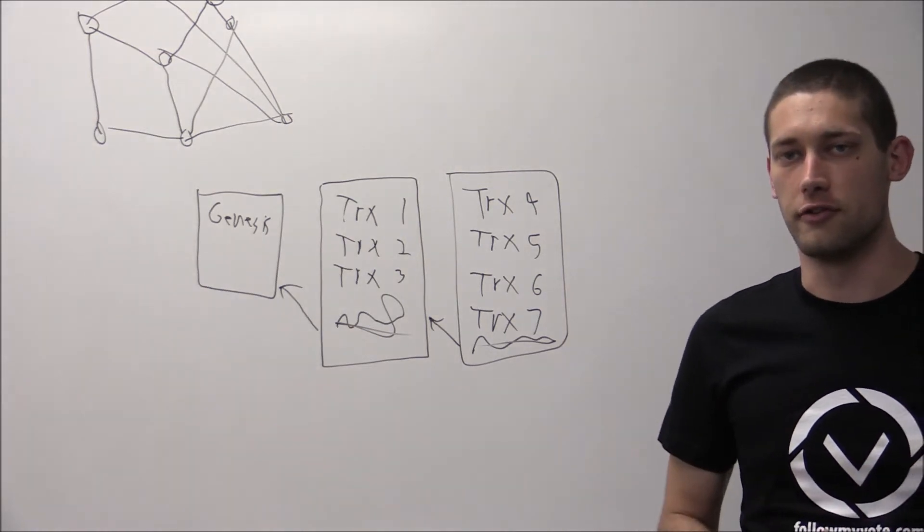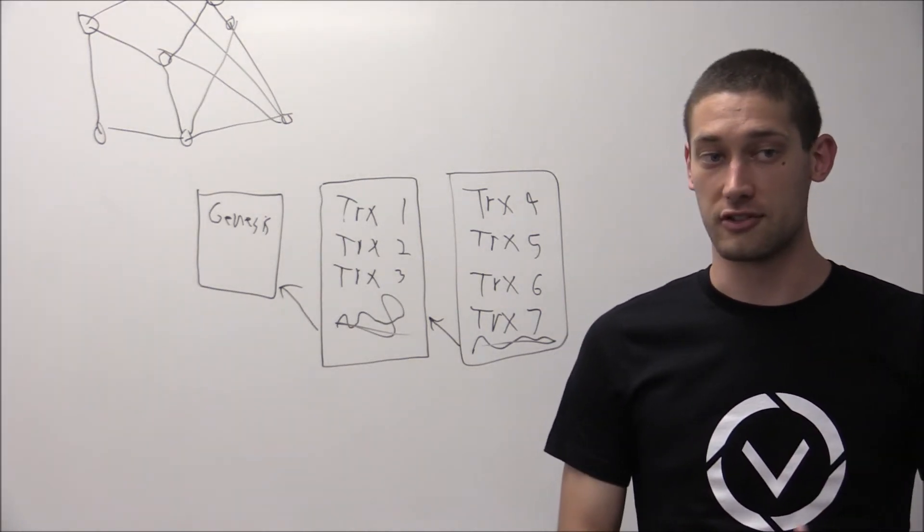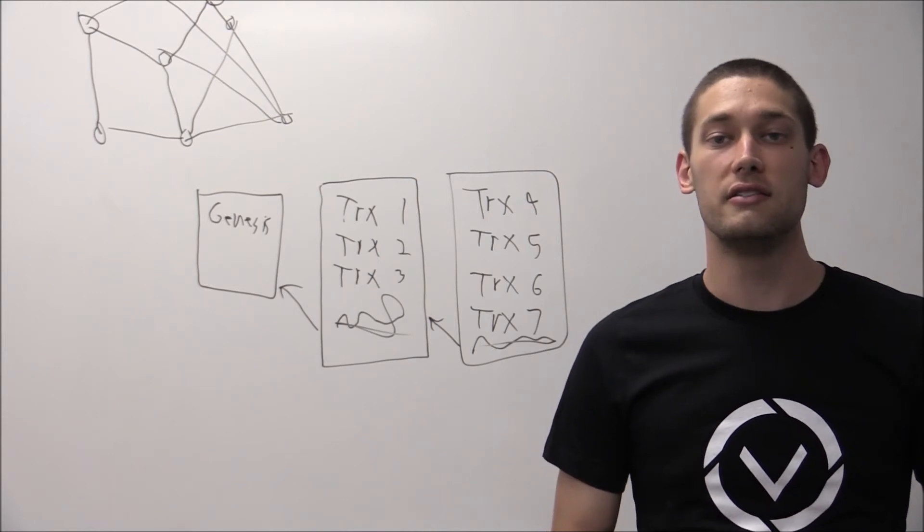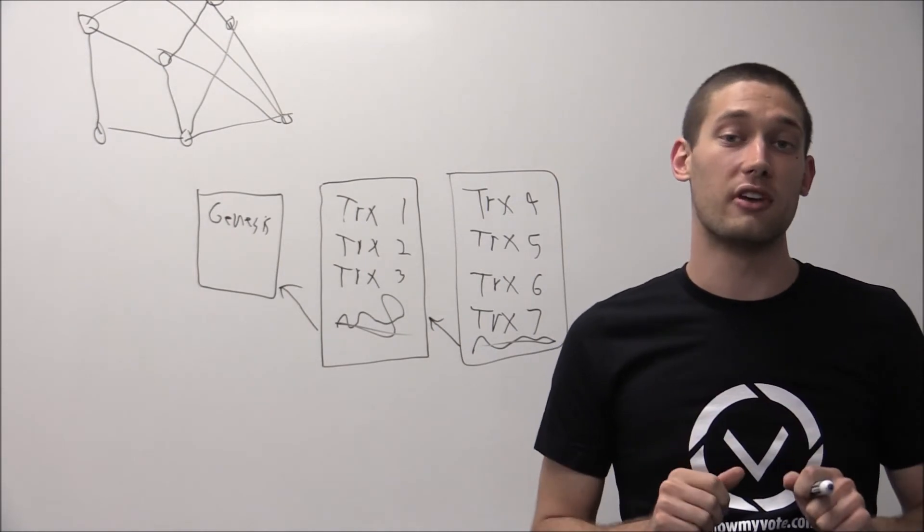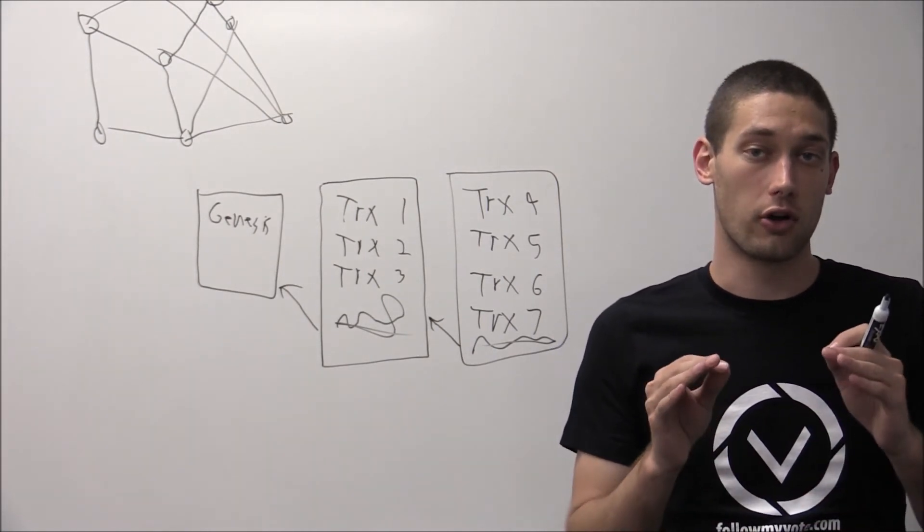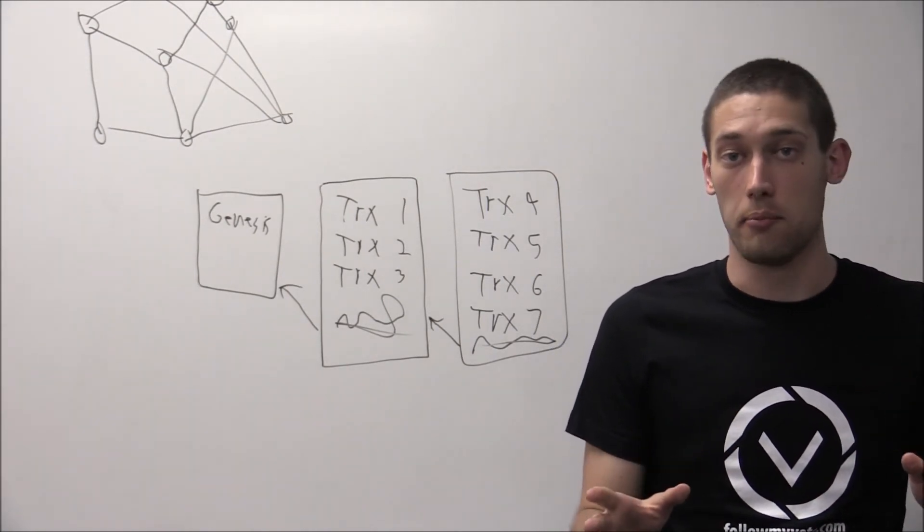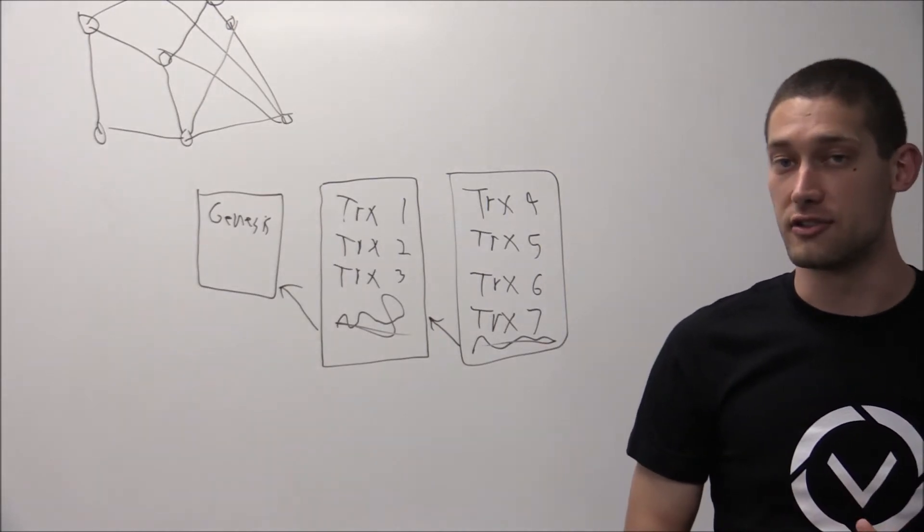Another interesting feature that blockchain-based voting systems provide is the ability to have real-time election results. This allows people to count the votes and determine the current tally at any time.